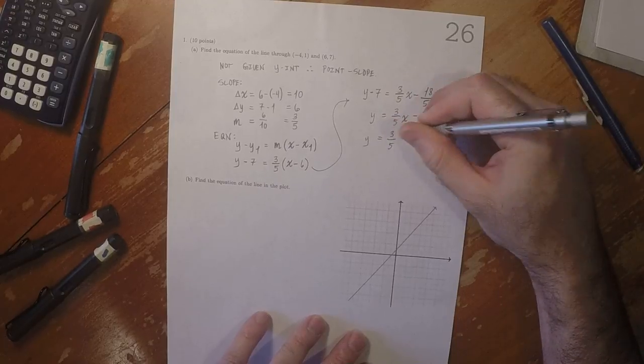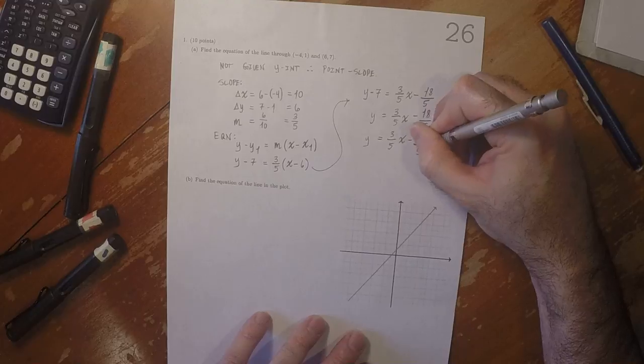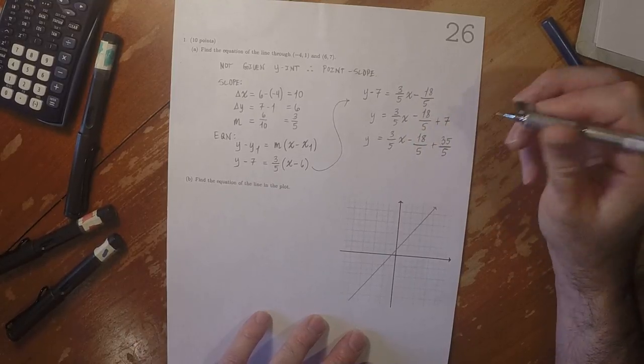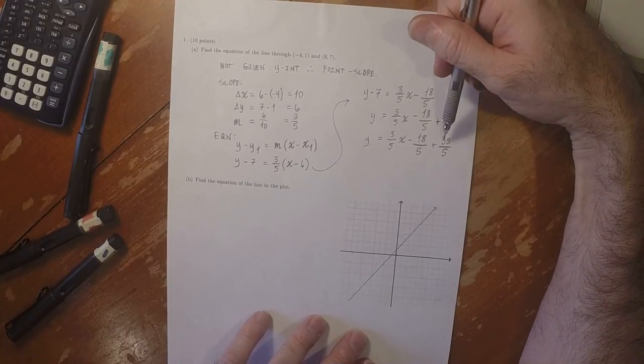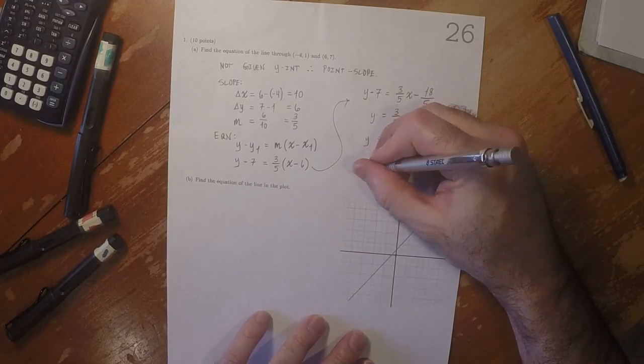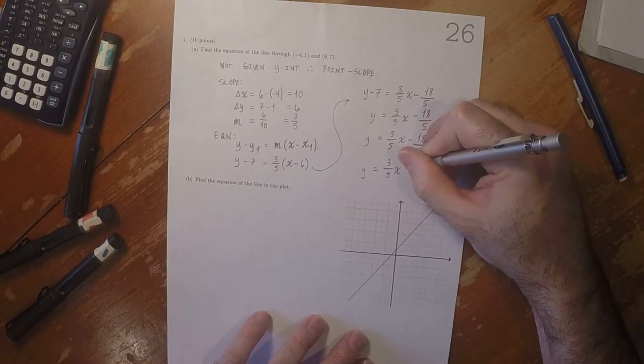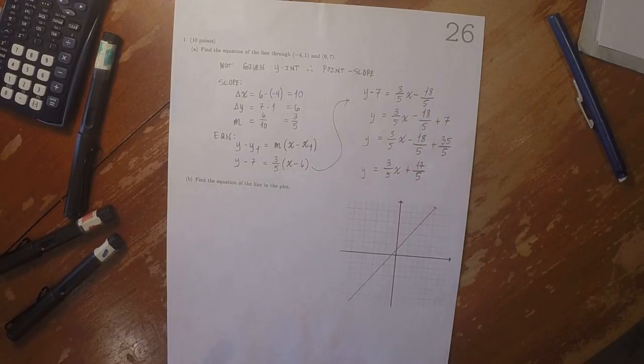3 fifths x minus 18 fifths plus 35 fifths. Adding those together, that's 17 fifths. So y is 3 fifths x plus 17 fifths.